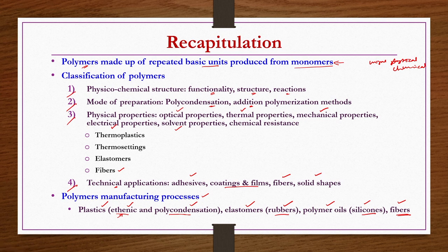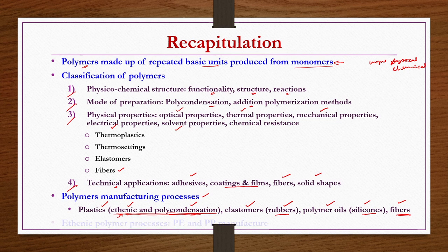Under polycondensation reactions, when the reaction proceeds, small molecules like water, ammonia, and formaldehyde are released to form polymers. These two types of polymers—ethenic and condensation—are being discussed in the present chapter. We have already completed polyethylene and polypropylene under ethylene polymer processes. Now we cover PVC, ABS, and similar polymers under the ethenic category, after which we go into phenol formaldehyde resins, polyurethanes, and epoxies under polycondensation processes.